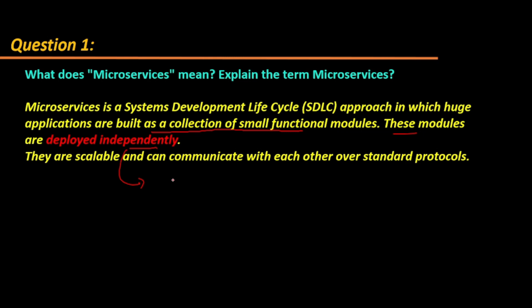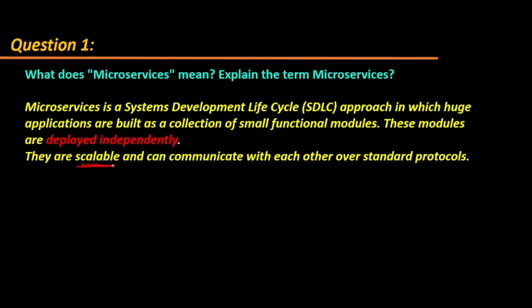When you are working on a monolithic application you have one big application, and when you are working on microservices you are converting that big application into small modules. These small modules you will deploy independently. They are scalable — meaning you can independently scale them — and they communicate with each other using standard protocols, whether over HTTP or whatever communication method you choose.